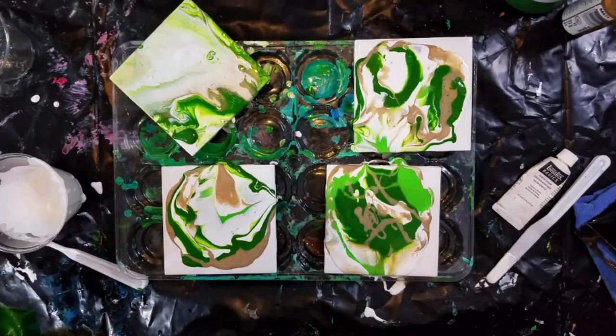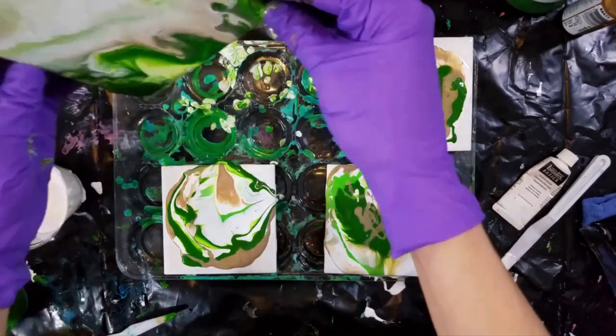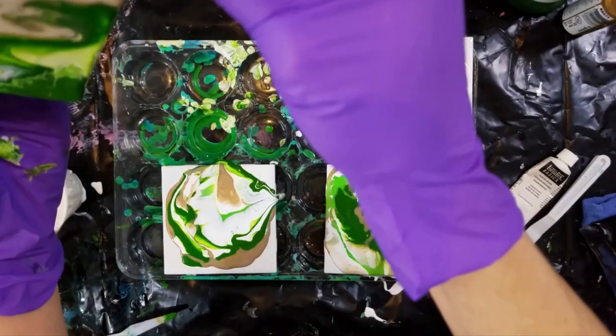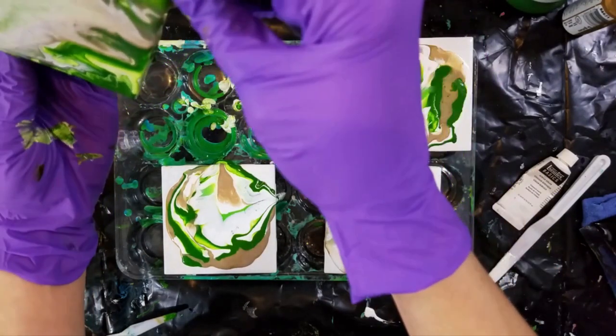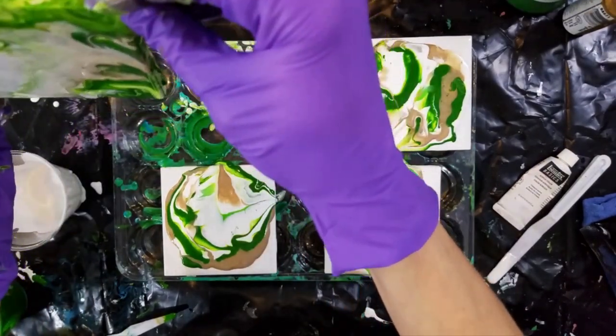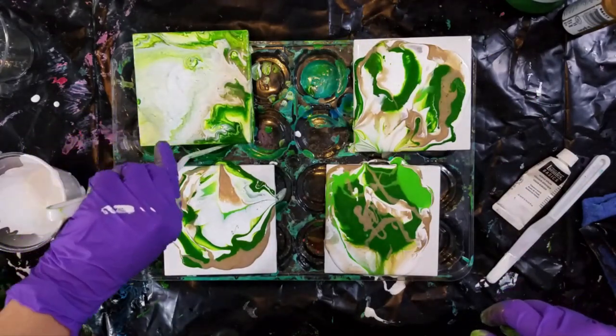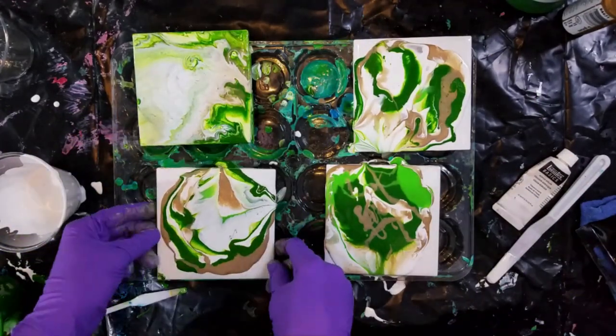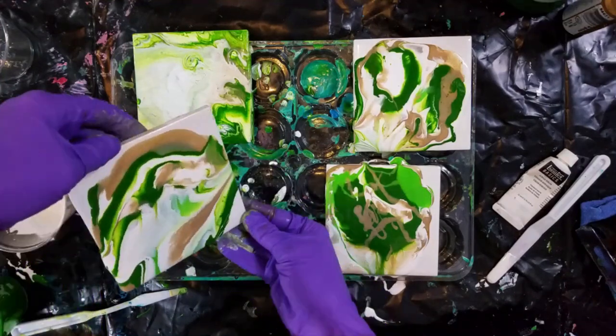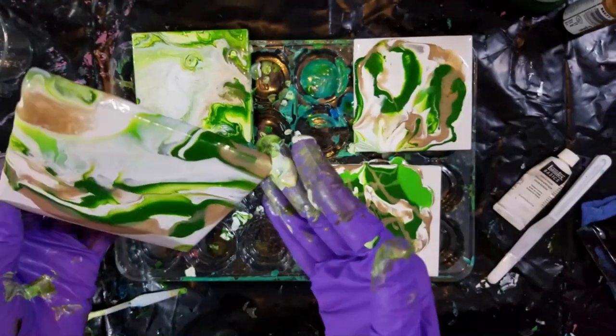Here what you see me doing where you see me dabbing it a little bit, sometimes part of it doesn't want to flow down the tile. But if you put a little bit more paint right in the area where it's not flowing, the paint will start to mix together and start flowing again. Otherwise you get these little ridges where it doesn't want to go completely over the tile.